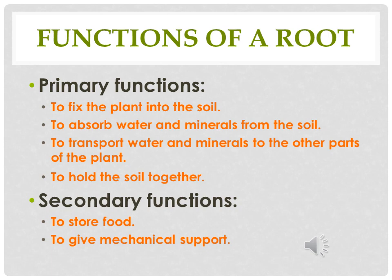The second secondary function is that some roots are specialized to give mechanical support to the plant. Because their branches are so heavy that they need extra support, such plants have adventitious roots which come from the outer parts of the plant — like from branches — and they grow downwards, giving extra support to the plant.